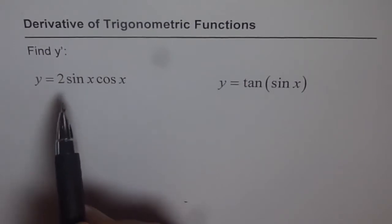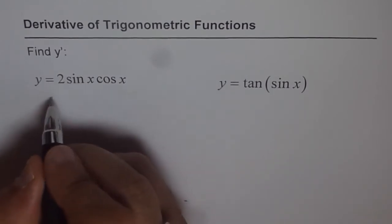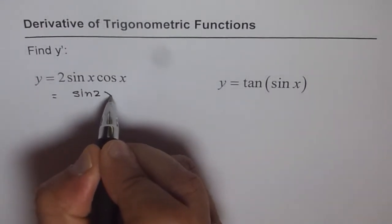Or what we can do is 2 sin x cos x is what? Is sin 2x. So we can write in that term and then do it. So I will adopt the second approach that is I will write this as sin 2x, correct?